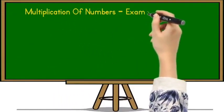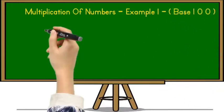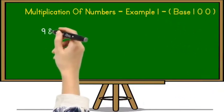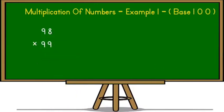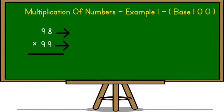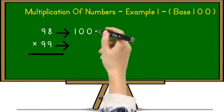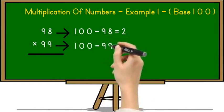Let's take example number one on multiplication of numbers whose base is 100. So here is the example 98 × 99. We know that for 98 and 99 base is 100. So we need to find out complement of 98 and 99. So 100 minus 98 is equal to 2 which is a complement of 98 and 100 minus 99 is equal to 1 which is a complement of 99 with the base 100.